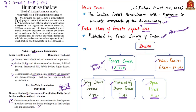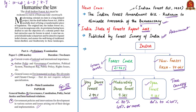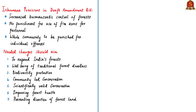Lands with tree canopy density of 40% or more but less than 70% are called moderately dense forests, and from 10% to less than 40% they are called open forests. Tree canopy refers to the upper layer formed by mature tree crowns. The amendment bill has draconian provisions including increased bureaucratic control, immunity for use of firearms by forest personnel, and penalizing the entire forest-dwelling community by denial of forest access for the offense of a single individual.